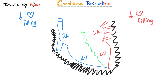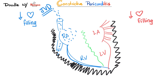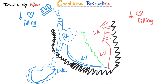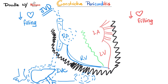Decreased preload on the right side means the right ventricle cannot accept blood during diastole. Blood piles up in the right atrium, then the superior and inferior vena cava. Superior vena cava congestion leads to jugular venous distension and increased jugular venous pressure. Inferior vena cava congestion leads to hepatic congestion, portal venous hypertension, and if severe enough, ascites — which starts before lower extremity edema, a condition known as ascites praecox.